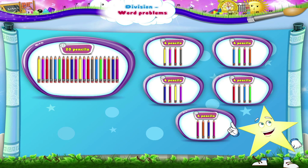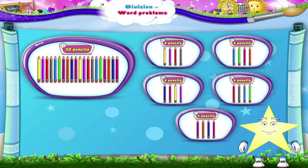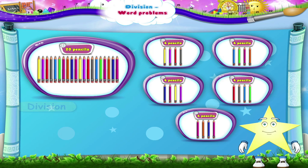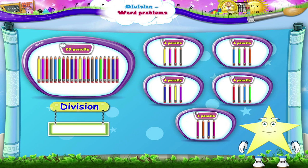4 pencils. How did you find this Starry? You did division! 20 pencils have to be divided into 5 groups. So 20 divided by 5, that is equal to 4.